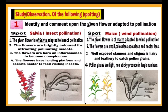Spot one: Salvia flower is given to you. It can be given as original flower or in the form of a chart. After identification, write the first point: the given flower is Salvia which is adapted to insect pollination. Point two: flowers are brightly colored so that insects can be attracted. Point three: the flowers are born on inflorescence, meaning flowers are grouped together in a definite pattern so that they can be visible to insects. Point four: flowers have a landing platform, meaning the shape of the petals is such that insects can easily rest and collect nectar from the flower, and during this process it results in pollination.